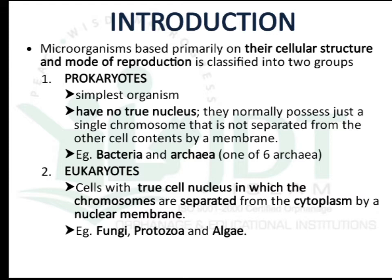What is the main difference between prokaryotes and eukaryotes? In prokaryotes there is no true nucleus, and they normally possess just a single chromosome that is not separated from other cell components by a membrane. Examples include bacteria and archaea. These are the simplest microorganisms — prokaryotes without a true nucleus.